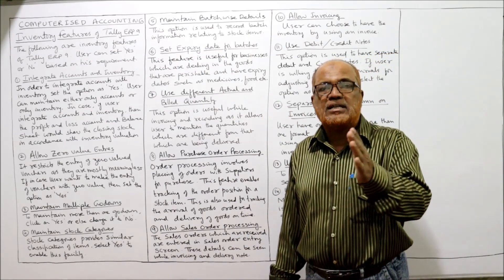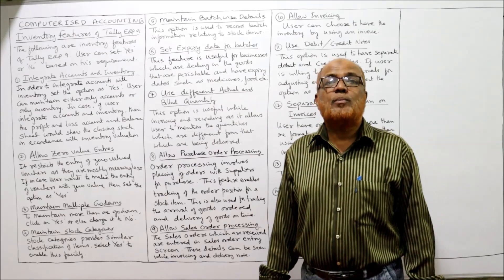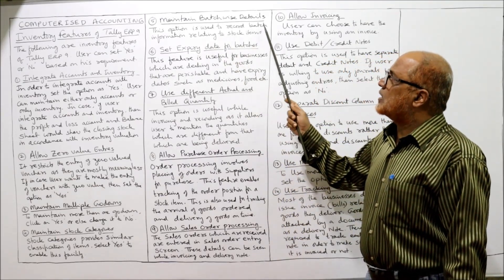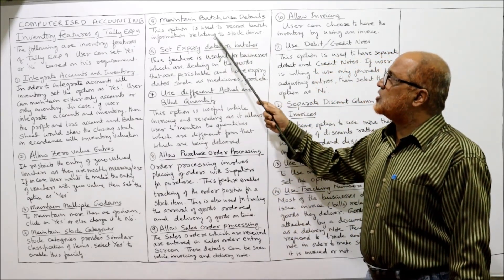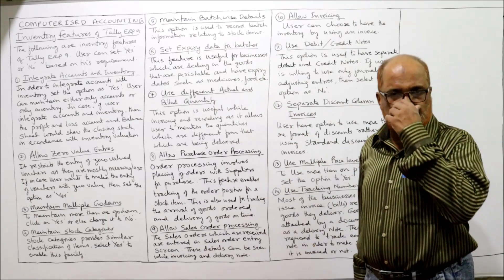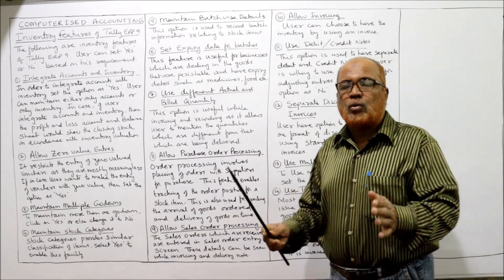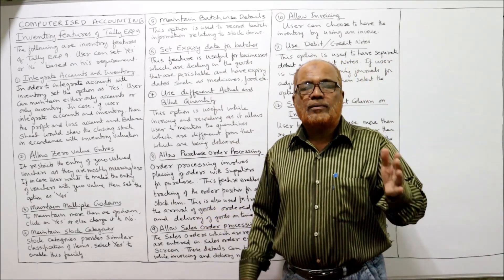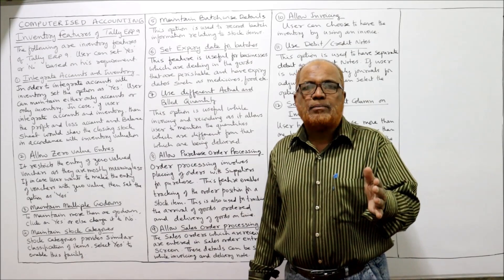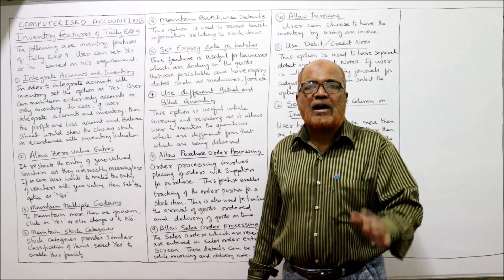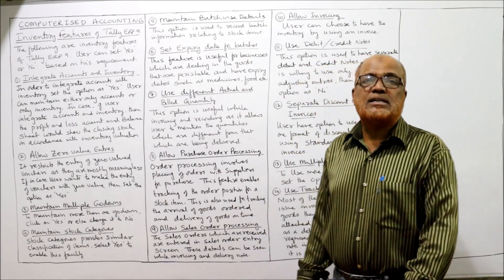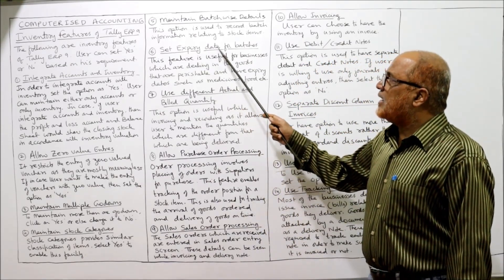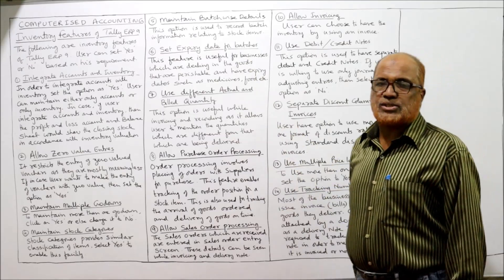The fifth feature is: maintain batch-wise details. This option is used to record batch information relating to stock items when goods are manufactured or dealt with in batches. The business can then have details regarding each individual batch.